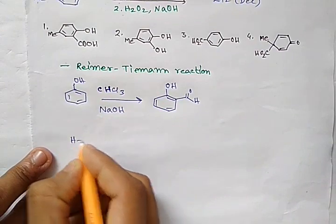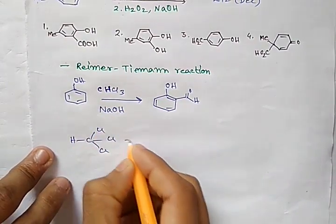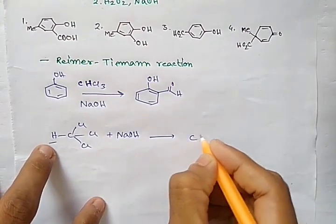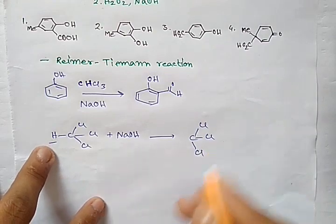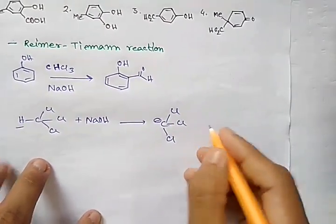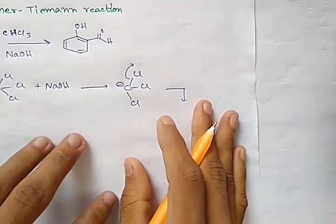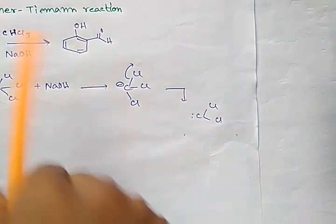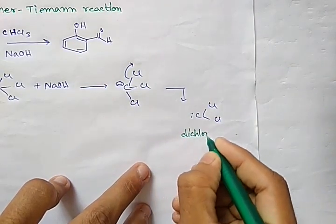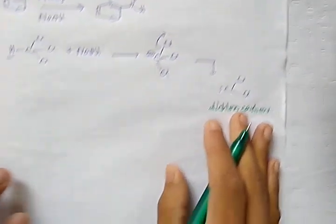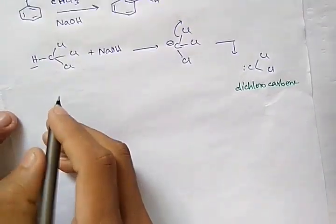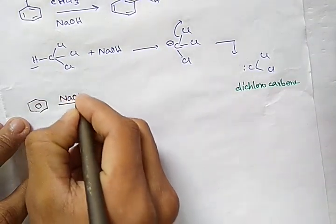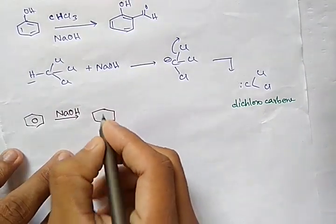When chloroform is treated with base sodium hydroxide, the base removes a proton to give a carbanion. After removing a chlorine ion, it forms dichlorocarbene (CCl₂). Meanwhile, phenol in the presence of base sodium hydroxide forms the phenoxide ion.